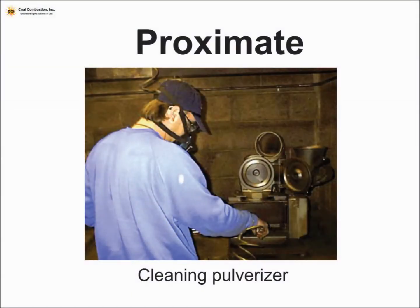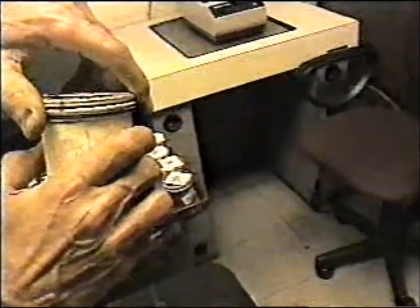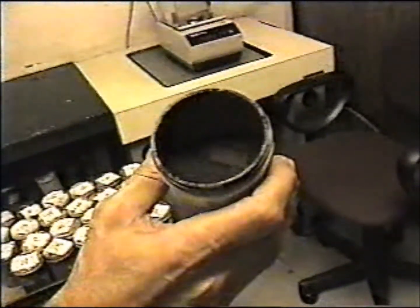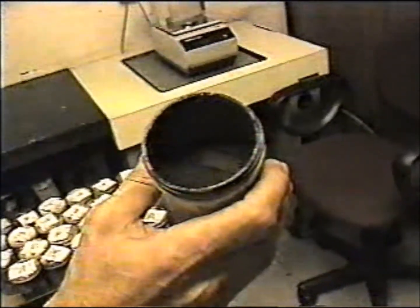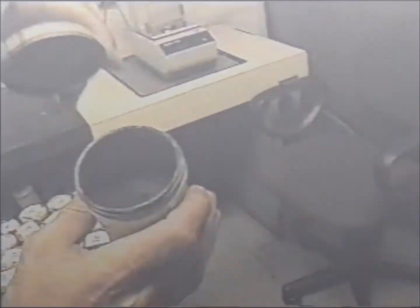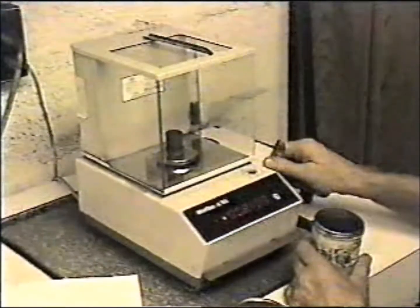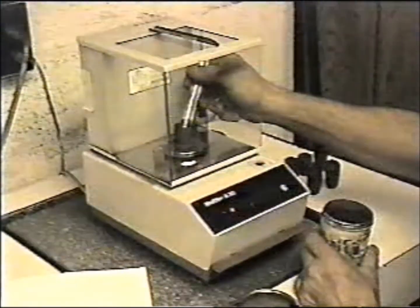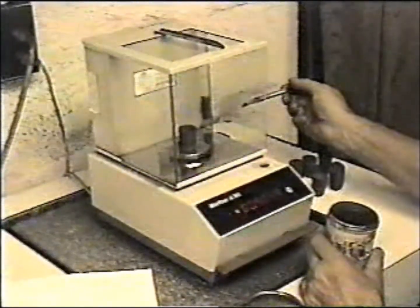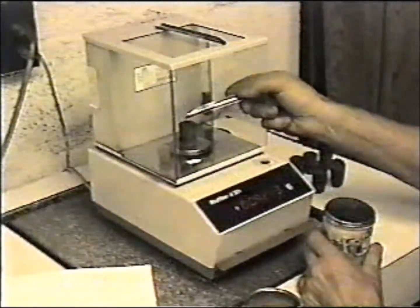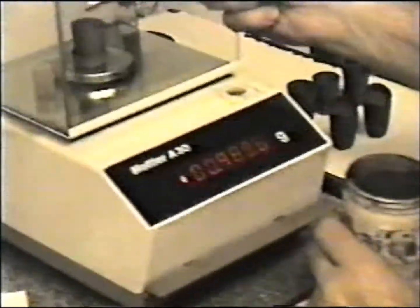Once you get that surface moisture off, you can pulverize the coal and prepare the laboratory sample. The laboratory sample is a 60 mesh minus, or a very fine powder of coal. We'll be weighing out about one gram of this material. When we go about weighing, we'd like the coal to not be too wet or dry, so we can weigh very accurately the amount of coal going into the calorimeter or the sulfur machine, whichever analysis we're going to do.